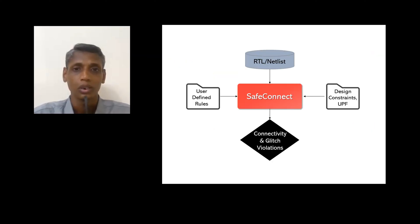We perform connectivity checking at every stage of the design flow. SafeConnect takes our RTL or netlist design, constraints, and power intent, and then performs the analysis, generating a comprehensive violations report based on our specified rules.